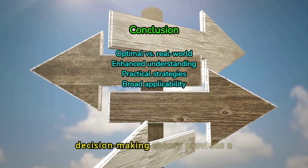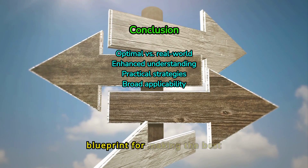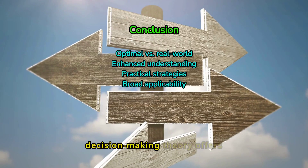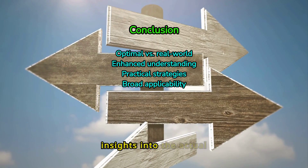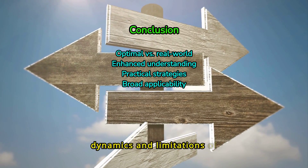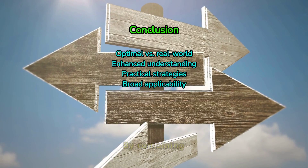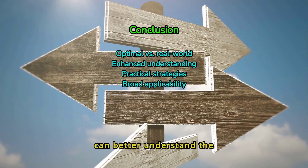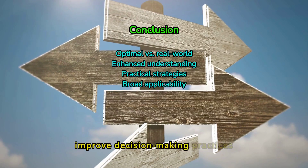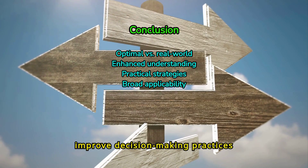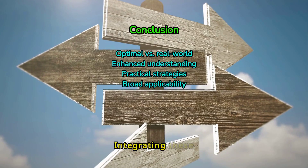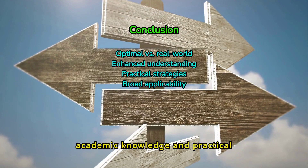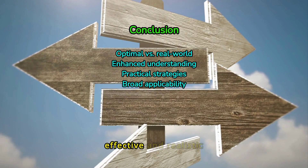In summary, normative decision-making theory provides a blueprint for making the best possible choices under ideal conditions, while descriptive decision-making theory offers insights into the actual dynamics and limitations of human decision-making. By combining insights from both approaches, we can better understand the complexities of decision-making and improve decision-making practices in various contexts. Integrating these perspectives enhances both academic knowledge and practical strategies, leading to more effective and realistic decision-making.